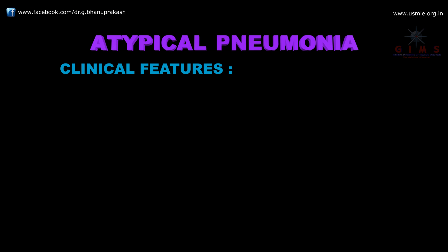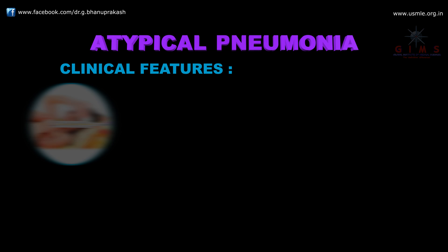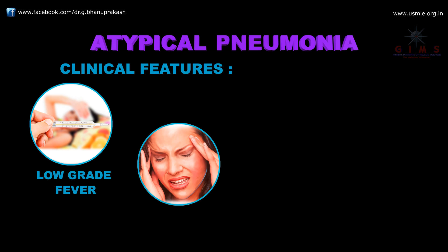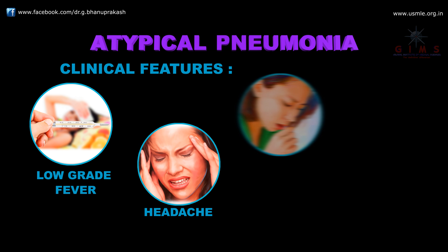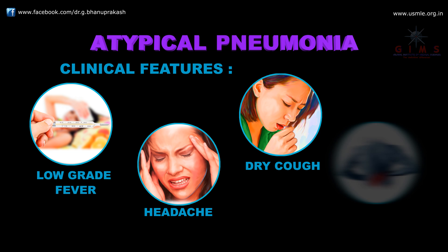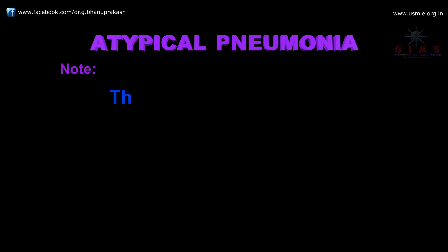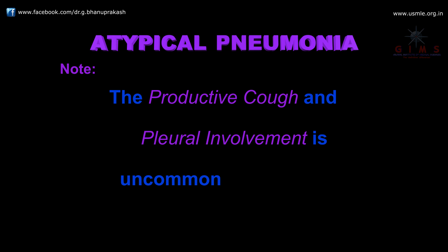The clinical features of atypical pneumonia include fever, though it is not the high-grade or acute onset type. Fever arises from chronic inflammation and chronic infection. The patient may also develop headache, dry cough, and myalgia. Importantly, productive cough and pleural involvement are uncommon in atypical pneumonia.